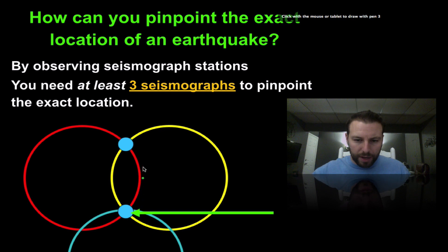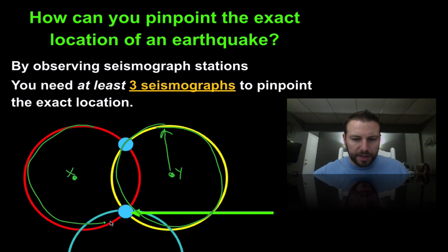When we have a circle, this right here from location Y is going to give us a certain degree or radius of where our earthquake is going to be. If we go to location X and pull out another seismograph, now where it intersects there are two possible locations. A third and final location will pinpoint or get us close enough to say this right here is our epicenter.